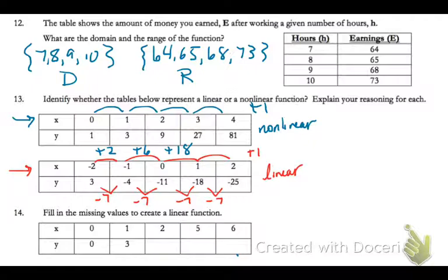And now I need to fill in the missing values. So, first of all, I look at my inputs. I increase by 1, by 1. But here, I am increasing by 3. And then here, I am back to 1. So, every time I increase by 1, I need to go up 3. So, I am going to add 3, so this will be 6.